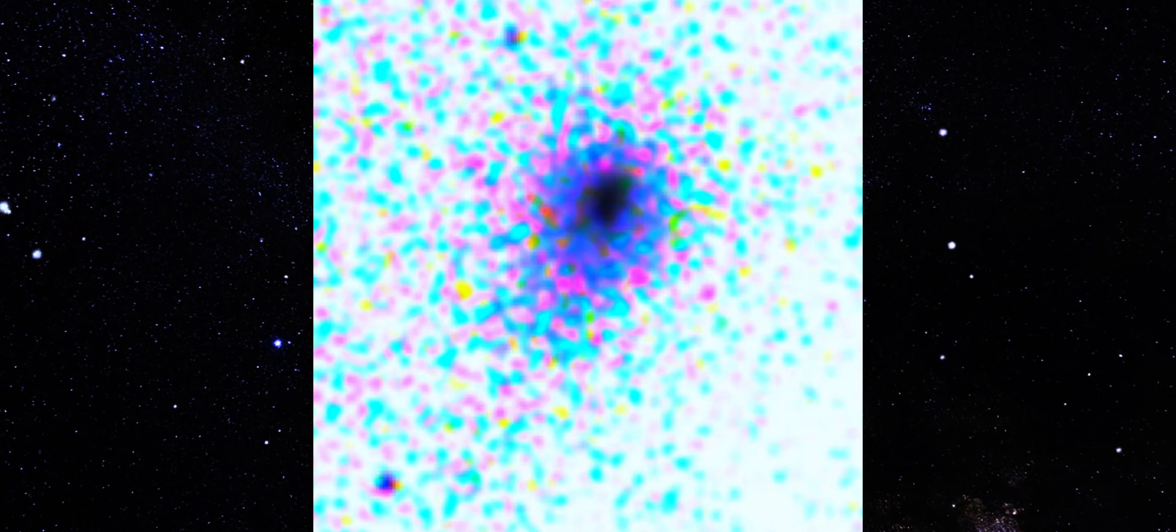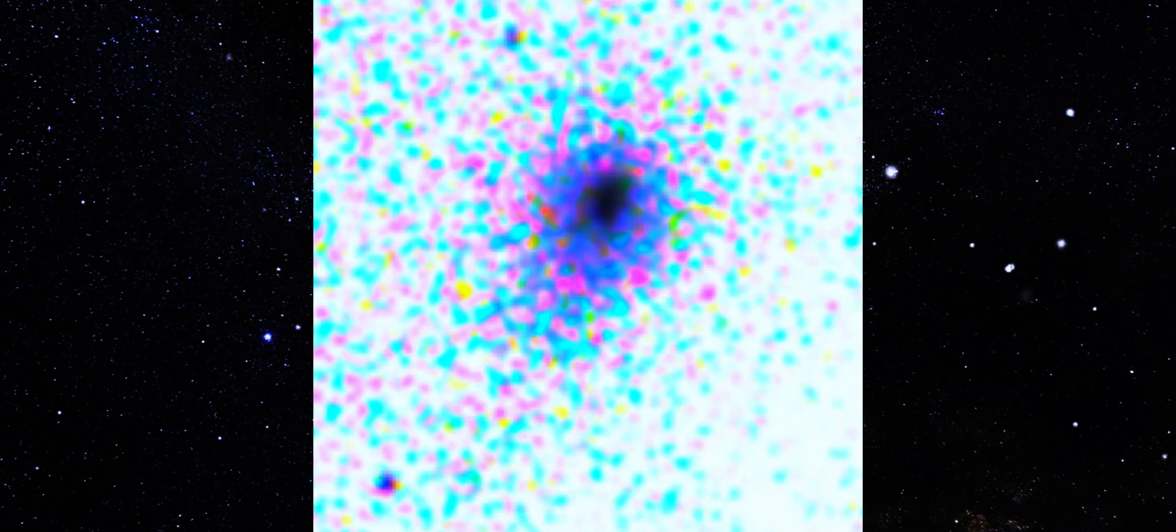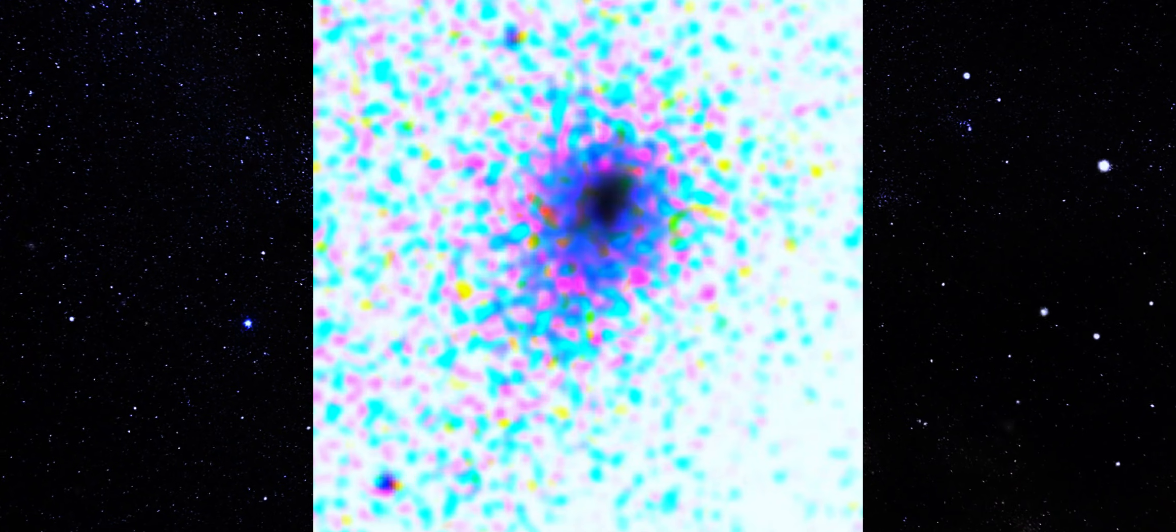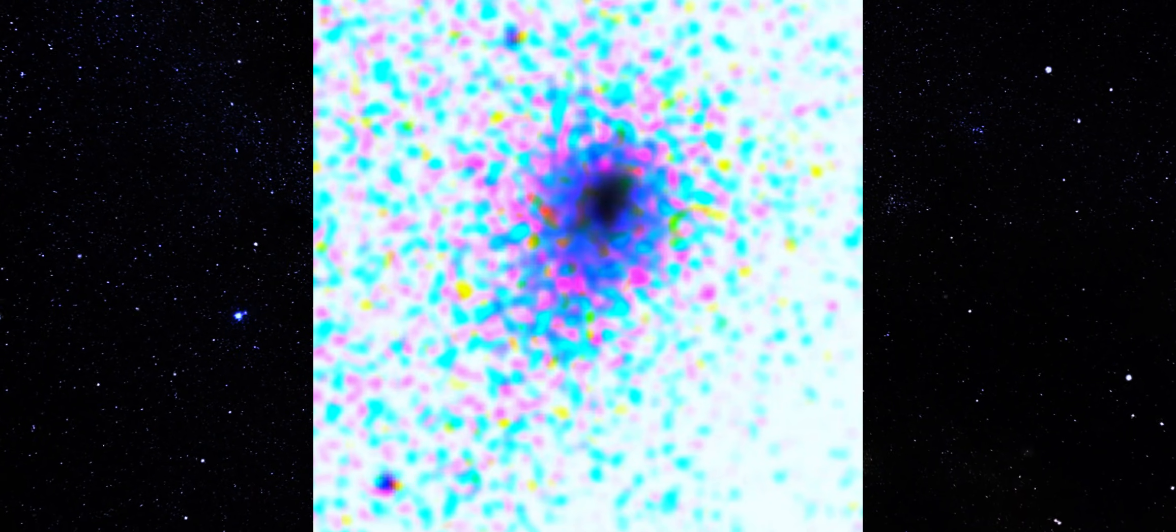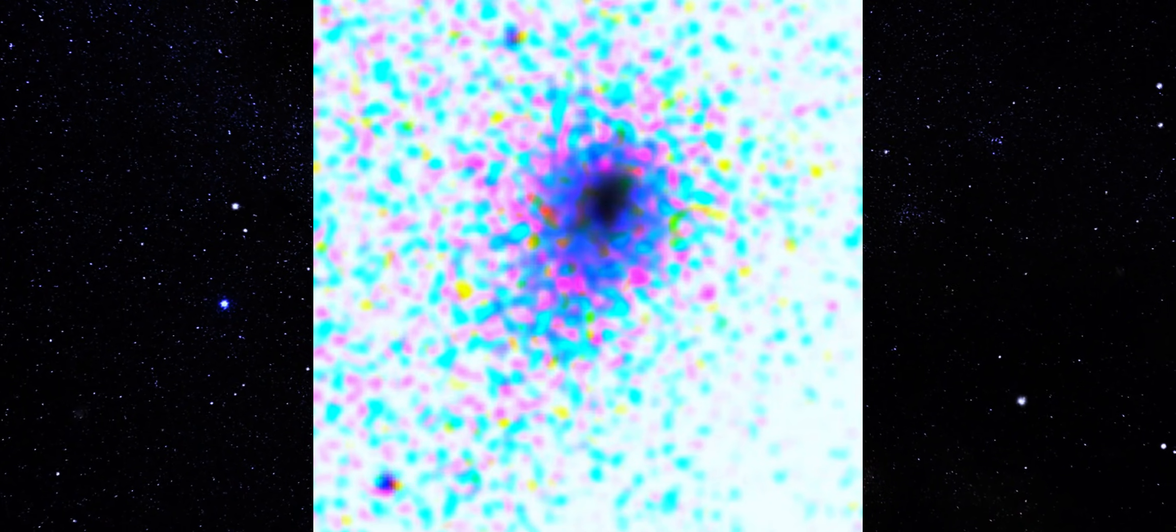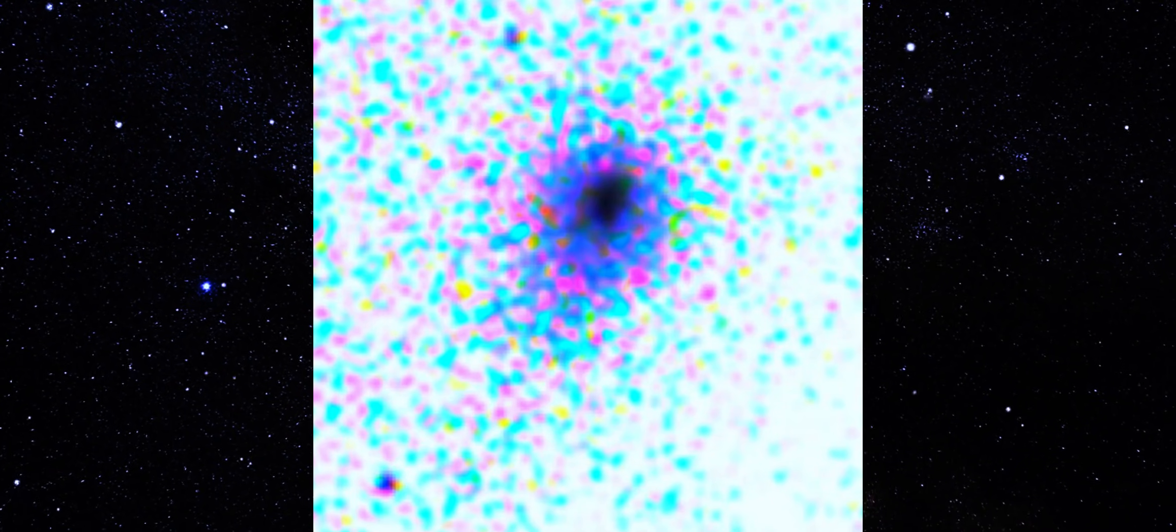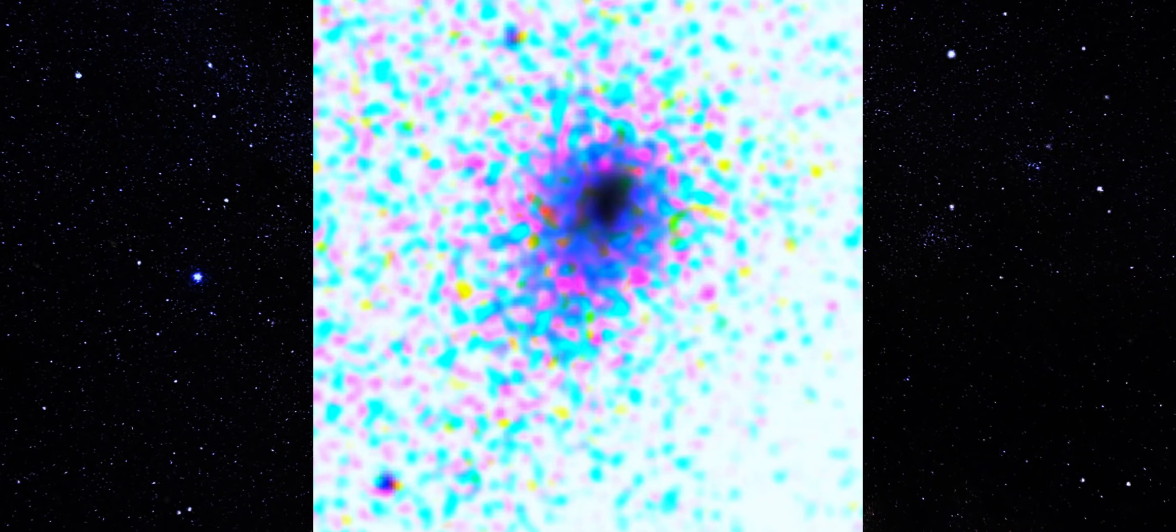You can trace a single direction from the core outward, even as the surrounding field turns chaotic. That's the key detail. Not brightness, not color. Direction. Across raw, color-separated, and inverted views, the same feature keeps reappearing. That's not processing. That's behavior.